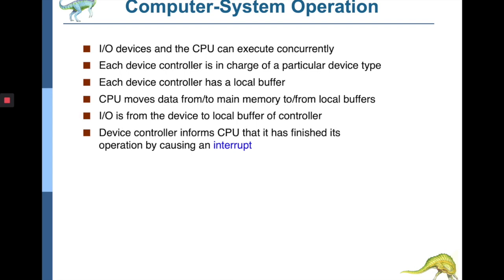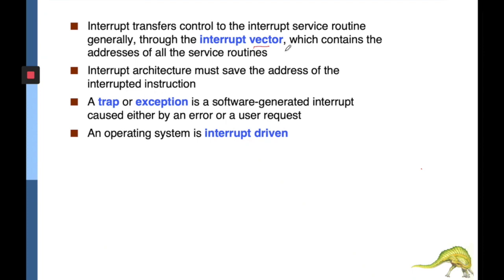The CPU moves data to and from main memory to the local buffer of the controller, and I/O moves data from the device to the controller's local buffer. Whenever new data arrives, the device controller tells the CPU that the operation has finished by causing an interrupt. This interrupt is at the heart of computer organization and the operating system. It signals whether an operation was performed successfully or not, and based on that, asks the CPU to take the correct action.